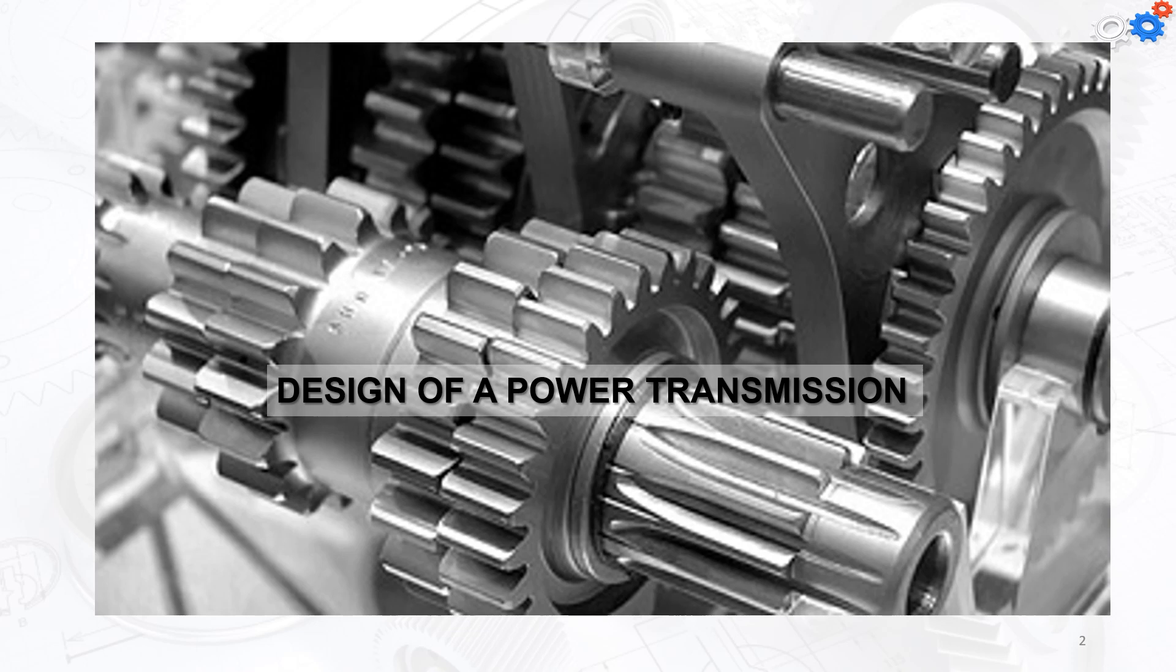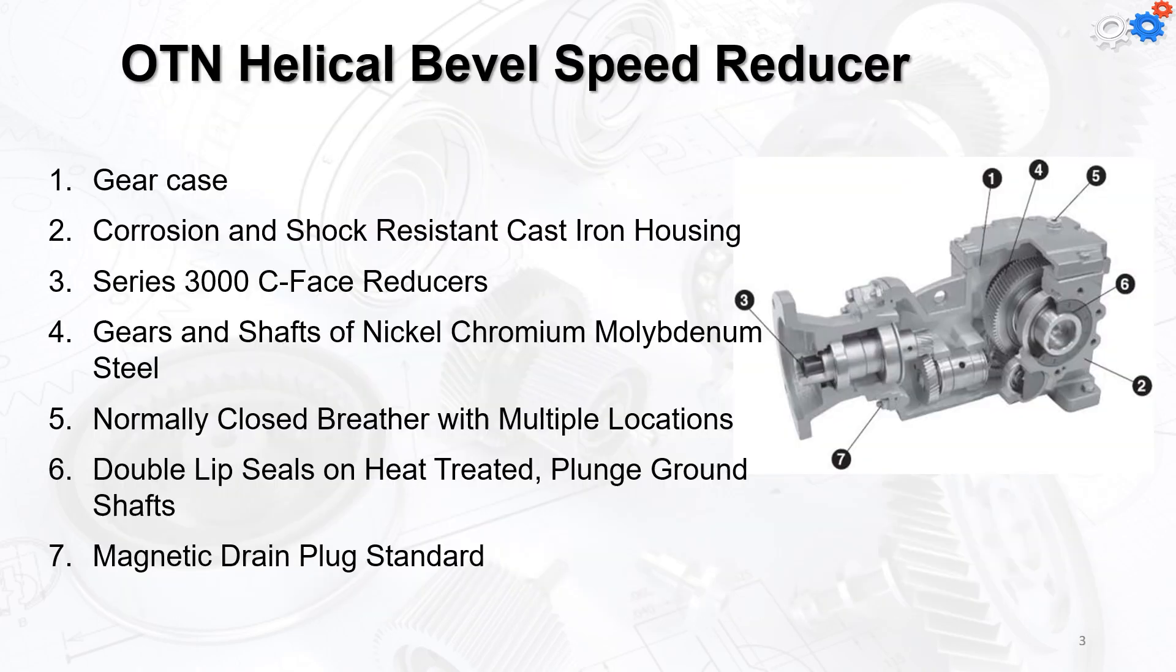In the second part, we're going to have a discussion about design of the power transmission system. We're going to look at the criteria for the design procedure. Our example is going to be the OTN helicode level speed reducer that consists of the gear case, the corrosion and shock resistance cast iron housing, and the series 3000 C-phase reducers.